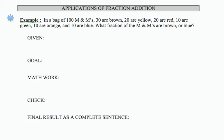So let's indicate some of the information that we're given in the problem. First of all, we know that we have 100 M&Ms total and that 30 of them are brown and 10 of them are blue. So let's write that information out where we can focus on it.